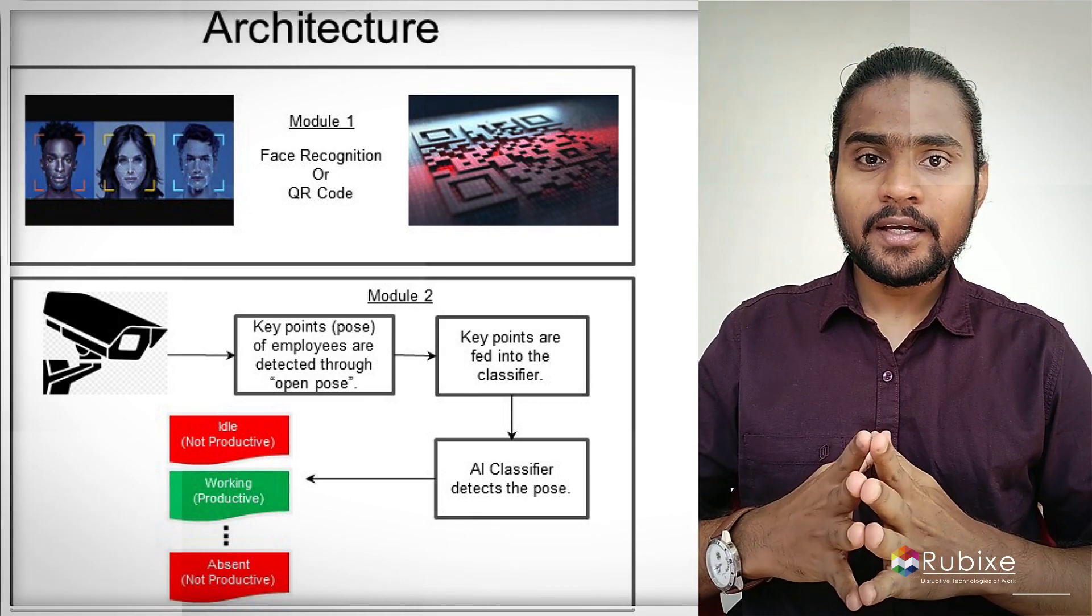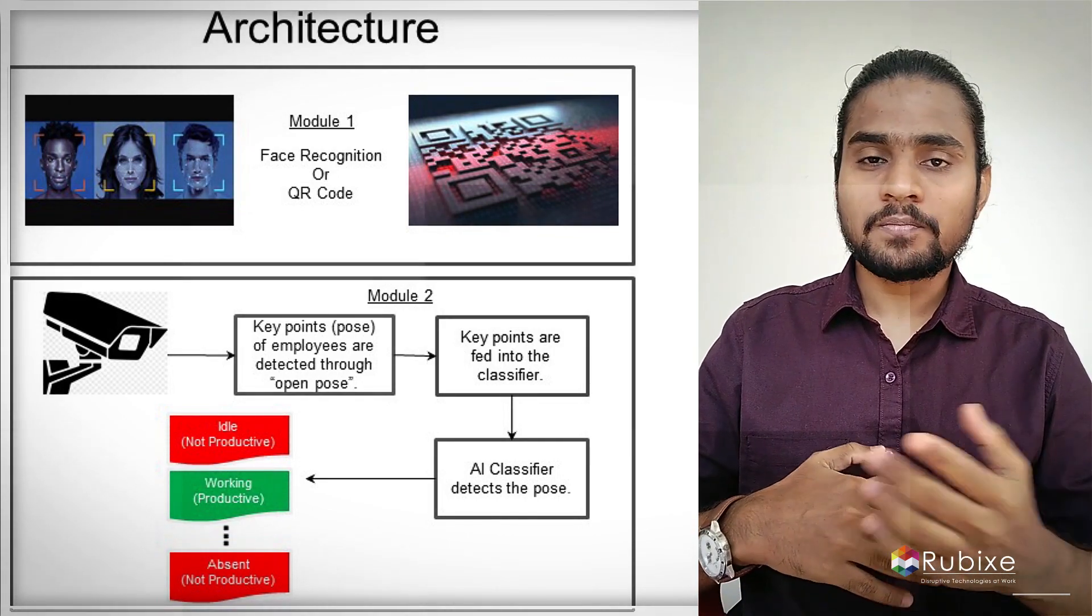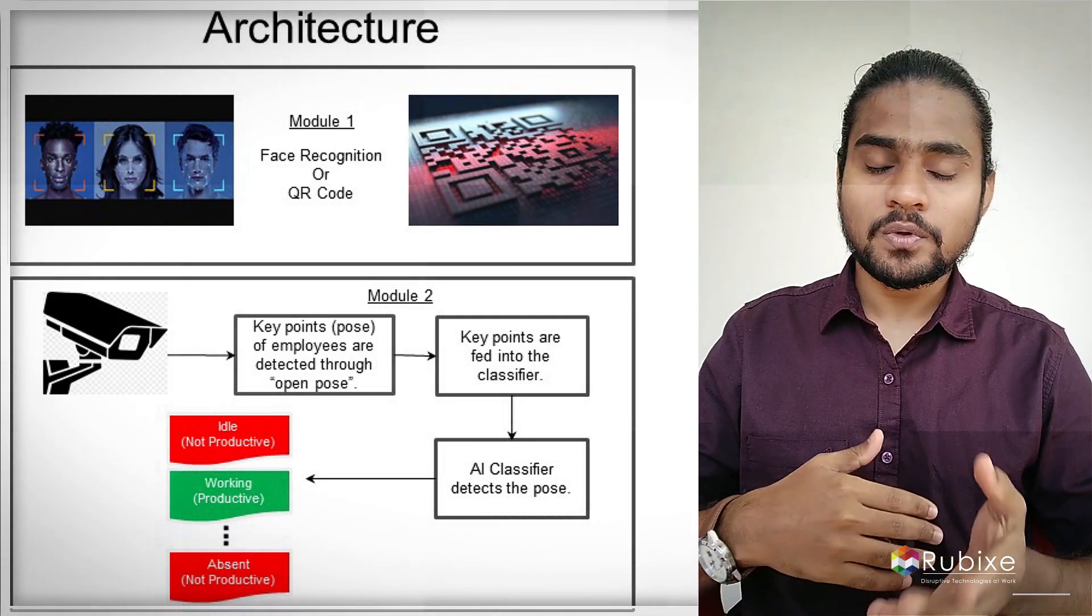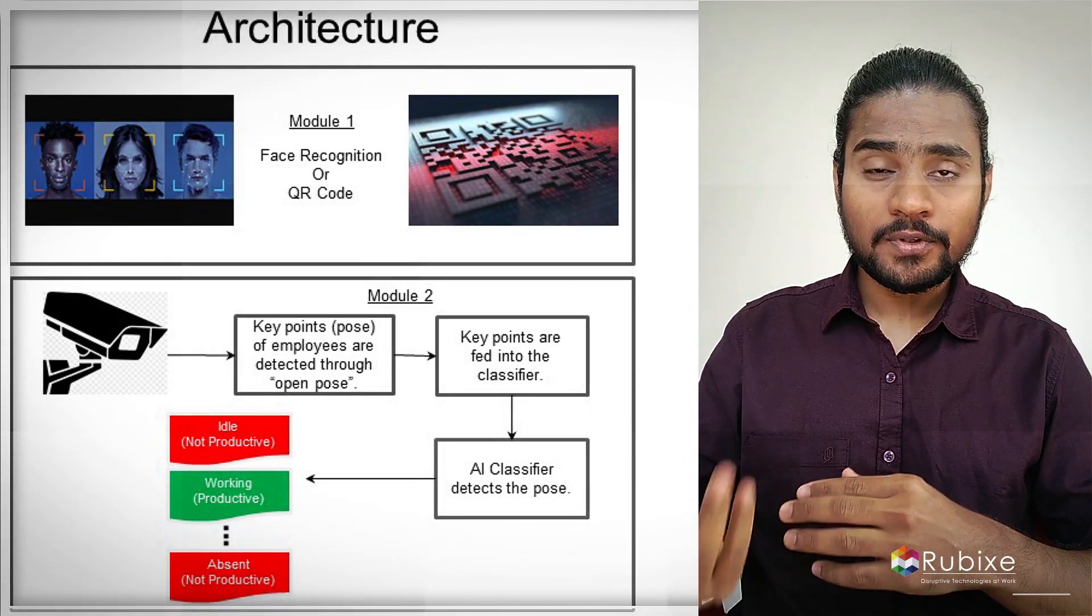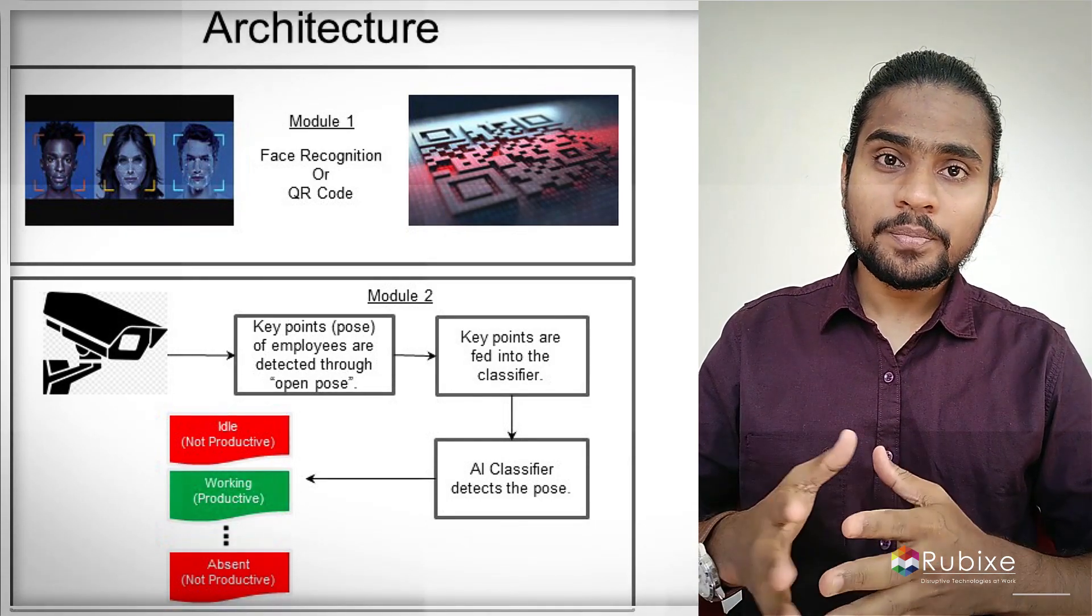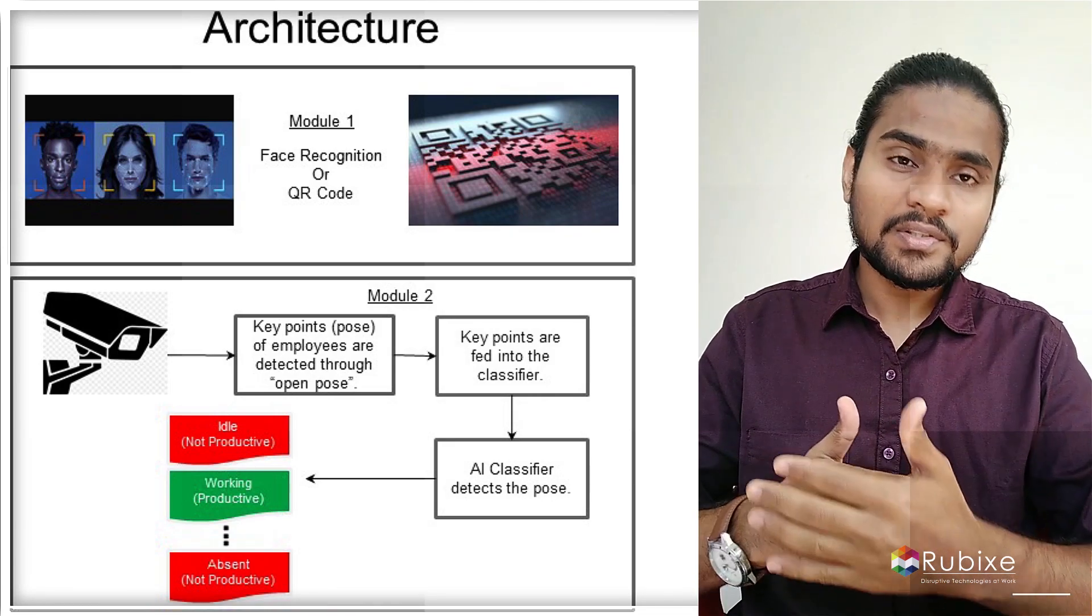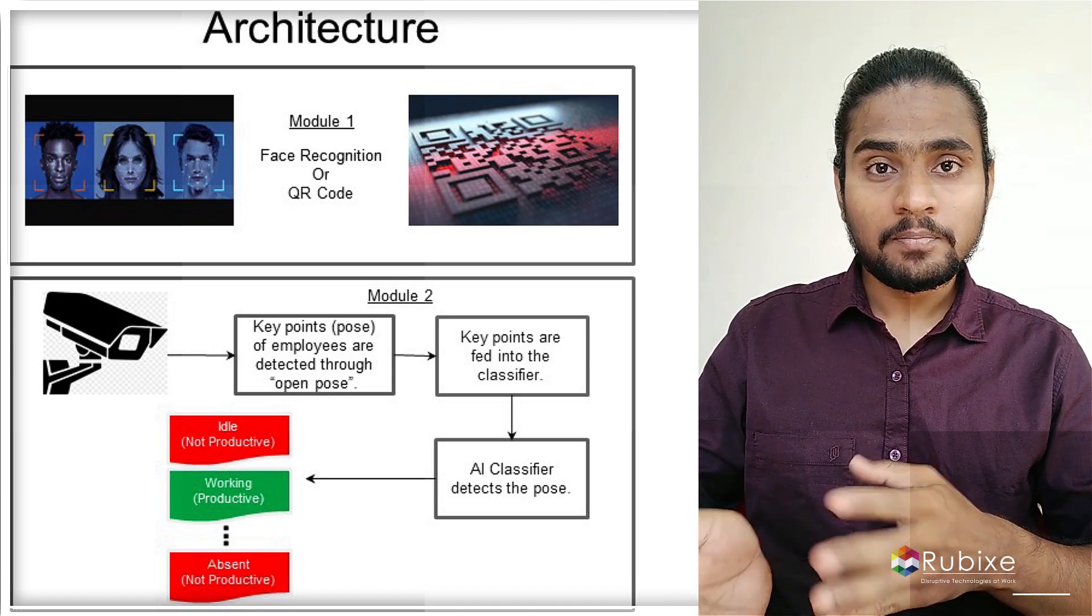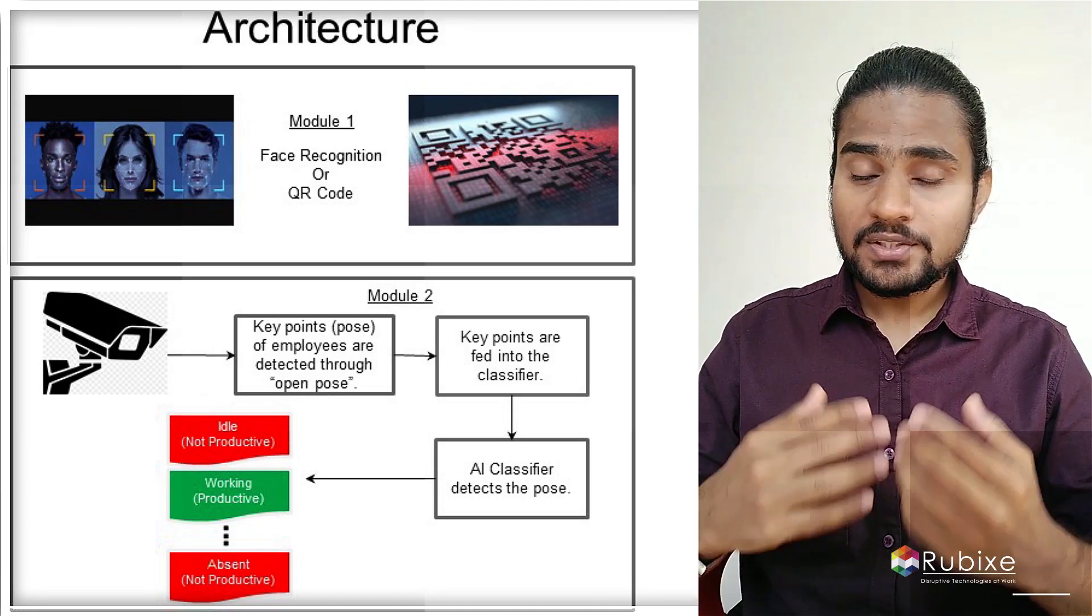In our project, the AI-enabled workforce monitoring system, we have one core module and two sub-modules. The core module is called the open-force architecture. The other two modules are the first one with face recognition and the second one with QR code. The combination of these three modules gives us an optimal working environment where both the employees and the organization can make strategic goals.